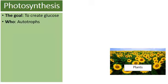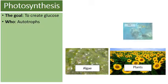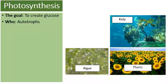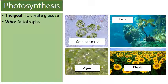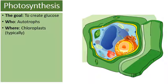Who is performing photosynthesis? Well, it's autotrophs. We generally think of plants, but plants are not the only autotrophs. You also have algae and kelp, which is actually a type of algae, and even some bacteria — the cyanobacteria. There are lots of organisms performing photosynthesis aside from plants.